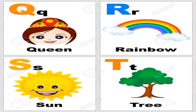Q for Queen, R for Rainbow, S for Sun, T for Tree.